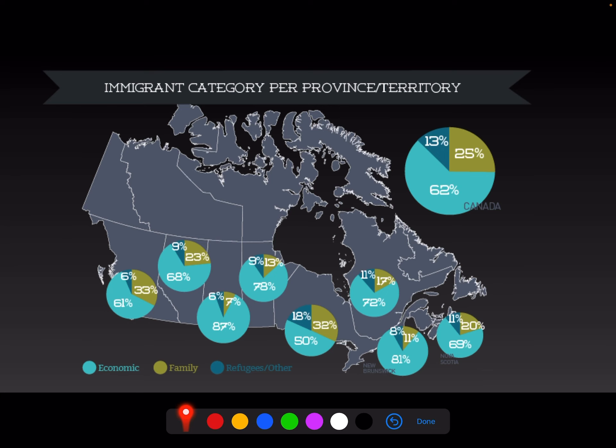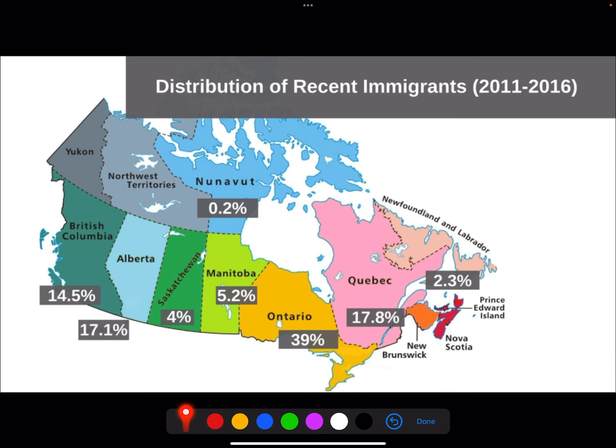Some provinces are much different. Take a look at Ontario — they have a lot more family class and even refugees coming to Ontario, which makes sense because of Toronto. A lot of people going to Toronto: when they think of Canada they think of Toronto. They don't automatically think of Edmonton or Calgary. This slide shows where immigrants have gone recently, 2011 to 2016.